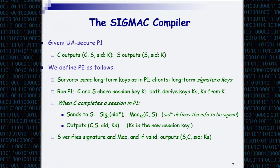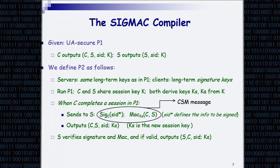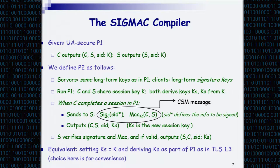Now the client and the server will both output a session with a peer identity, and they will have a session key called KS. S verifies the signature and the MAC, and if they are valid, it outputs the session saying: I am the server, I exchanged the key with this particular client, with this session ID, and this is the key I computed. I call this pair of signature and MAC the CSM message — client's signature and MAC.